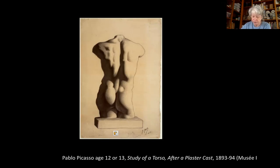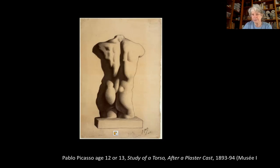Picasso was able to study academic figure drawing from a very early age, and basically that's all he would do. When they made him go to school, he'd say, 'Give me a pencil and a piece of paper, and I'm going to go draw.' He spent his childhood learning to draw from plaster casts — copies of classical sculpture that students could copy in art schools of the late 19th century.